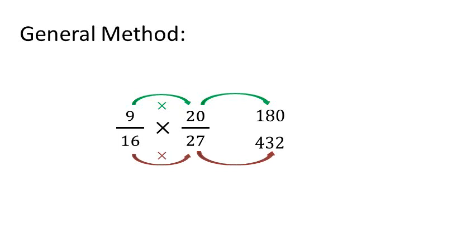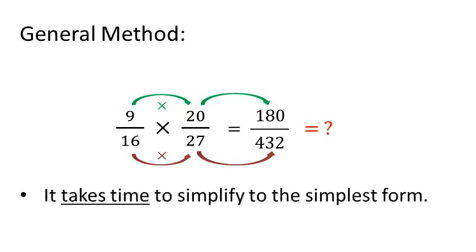So we have 180 over 432. This is not the simplest fraction, but how can we simplify it? It may take some time to simplify this fraction. Actually, some fractions are really difficult to simplify. So let's try the cancellation method.